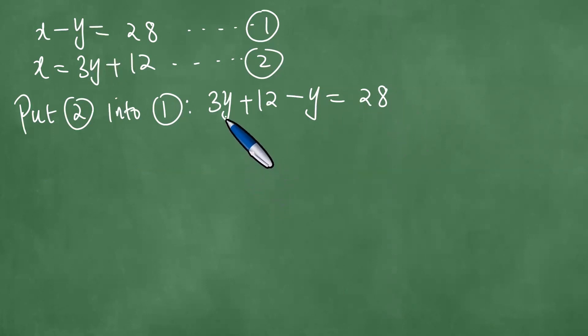Now 3y minus y gives us exactly 2y equals 28 minus 12 gives us 16. Dividing both sides by 2 gives us exactly 8. And we have that y equals 8.